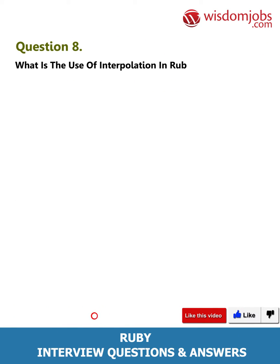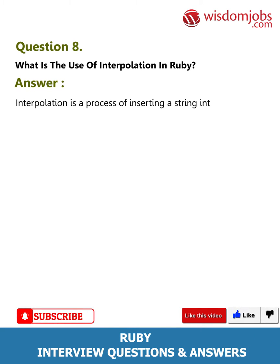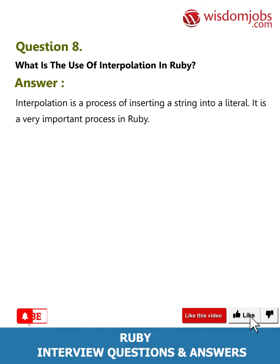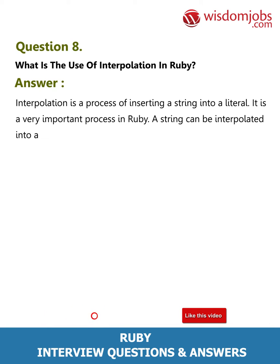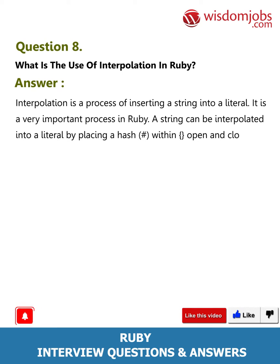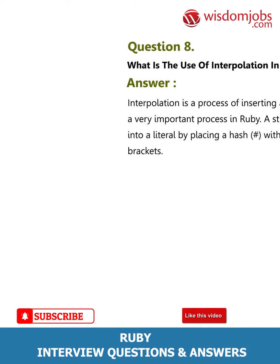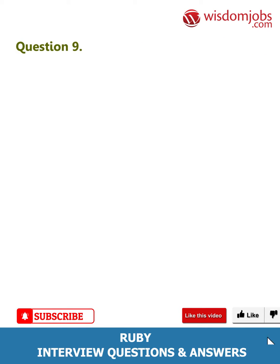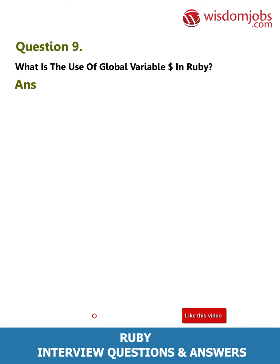Question 8: What is the use of interpolation in Ruby? Answer: Interpolation is a process of inserting a string into a literal. It is a very important process in Ruby. A string can be interpolated into a literal by placing a hash within open and close brackets.